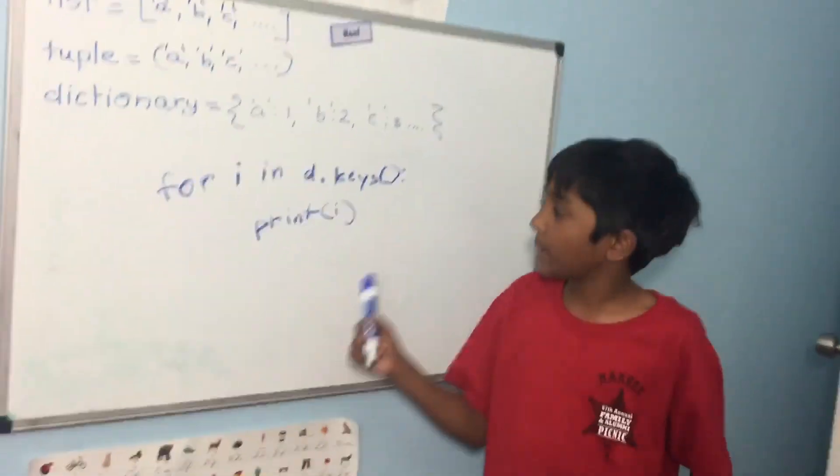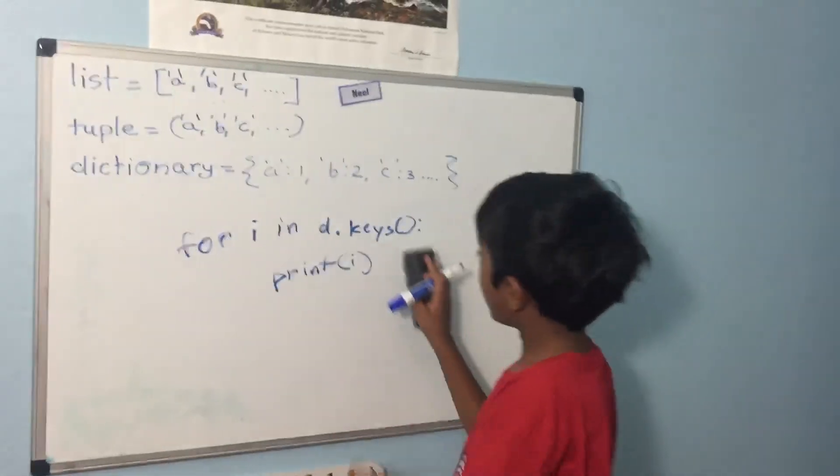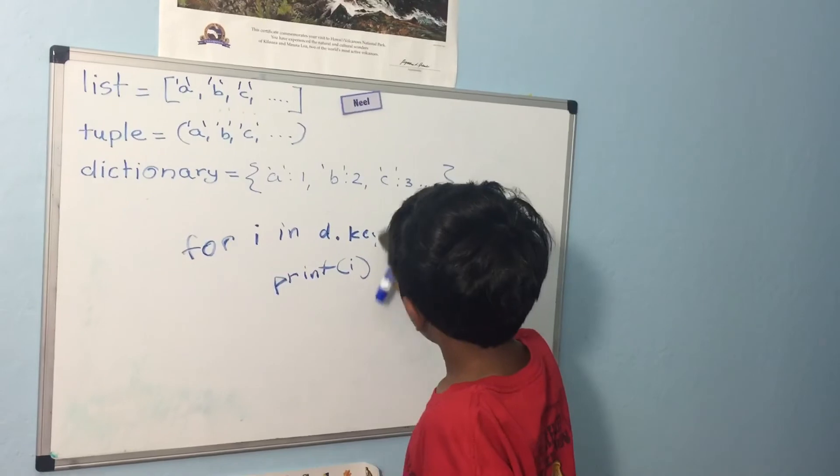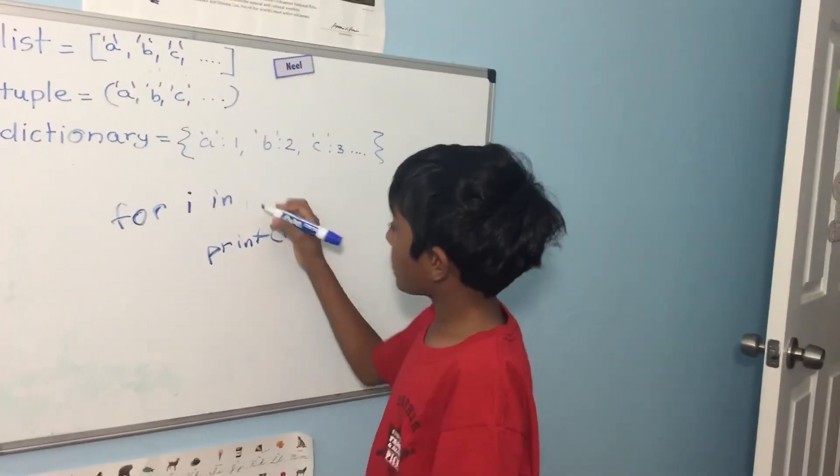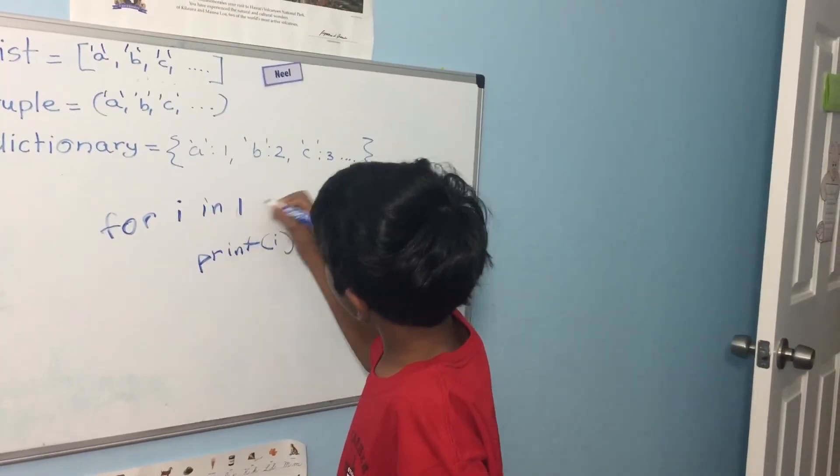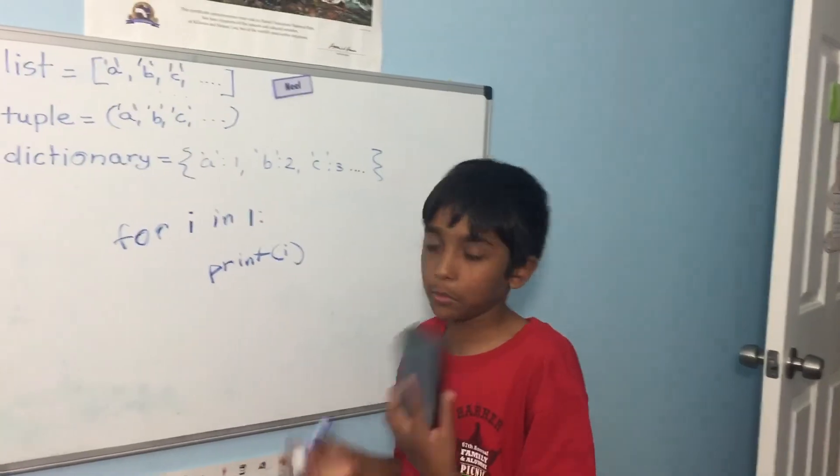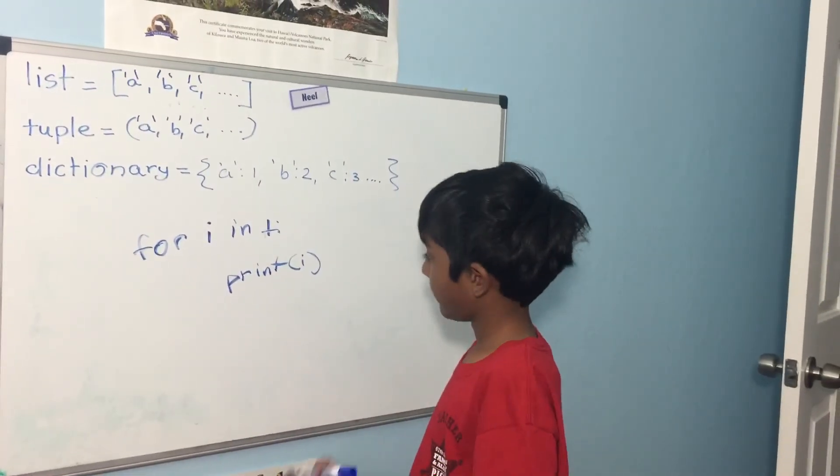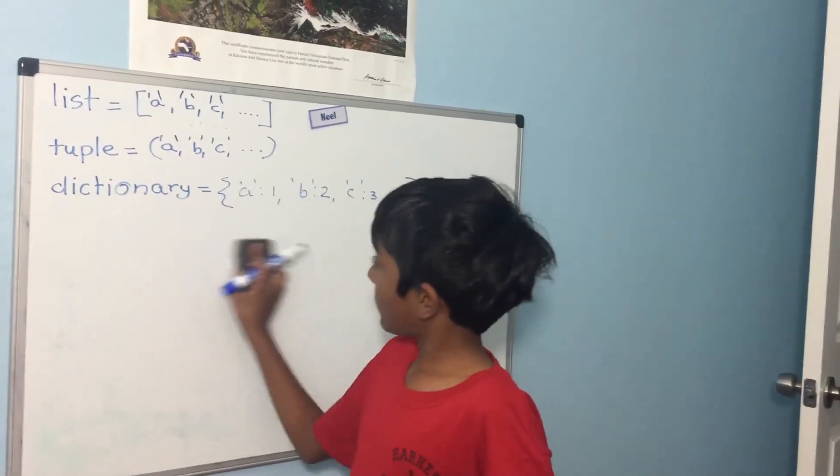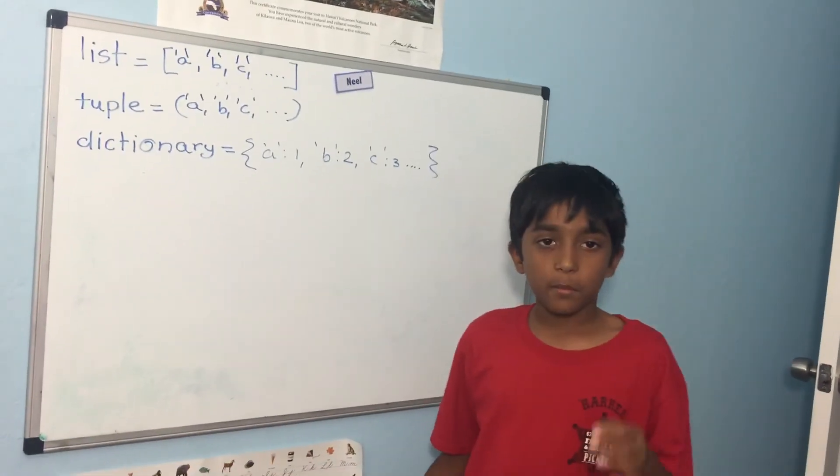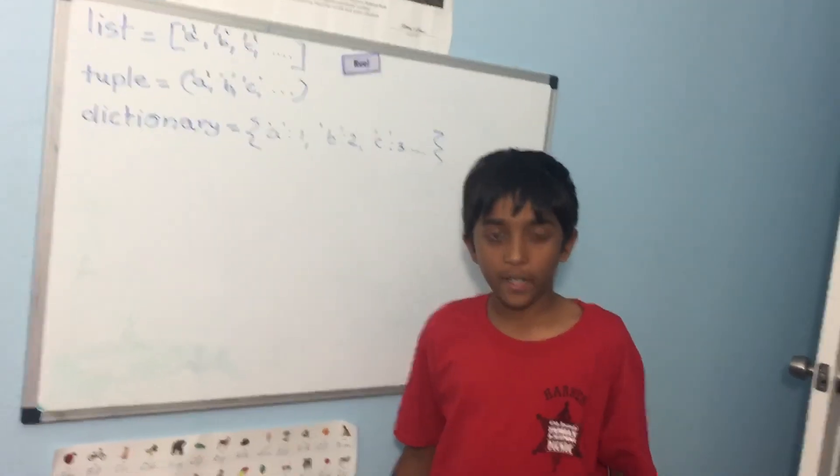This is the same for a list and a tuple. But instead of this, you just do the list name. Same with the tuple obviously. So that is the basic data structure of Python.